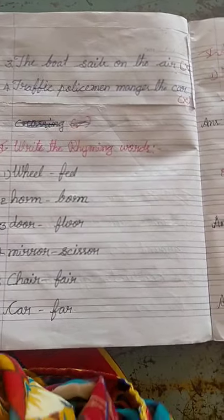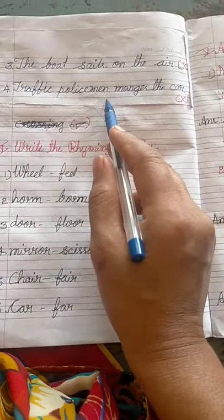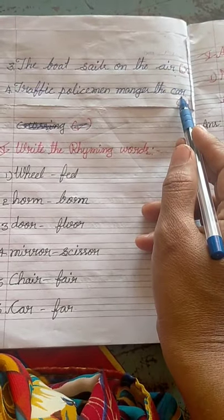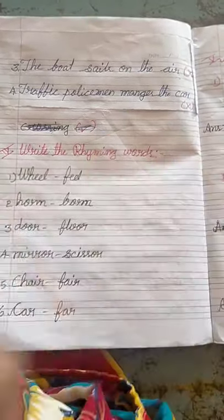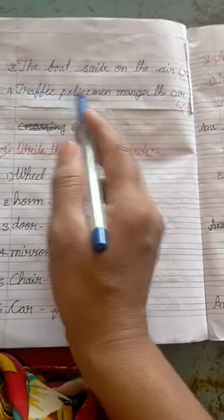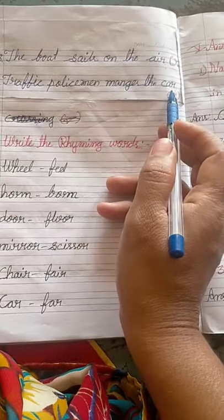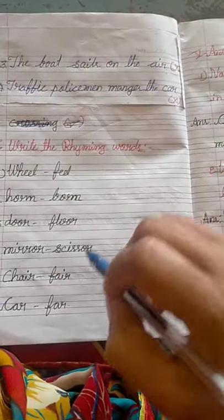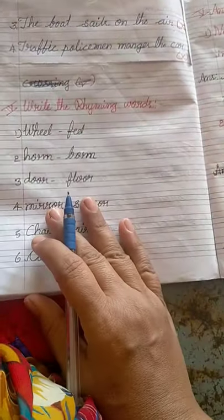Next, the fourth one: the traffic policeman manages the car - is it right? No, it's wrong. The traffic policeman manages the road traffic, not a car. He manages the road, so this one is wrong.